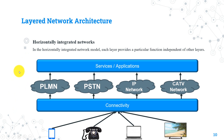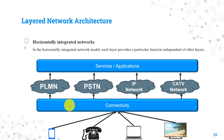In the horizontally integrated network model, each layer provides a particular function independent of other layers. Horizontal networks are not network-independent but layer-independent. The mobile operator can now have connectivity, control, and application layers, which contain the nodes that enable connection to PLMN, PSTN, IP network, or CAT networks at the same time. So a subscriber in a mobile operator can make voice calls, browse the internet, or even call a PSTN landline number. The three independent layers are the connectivity layer, control layer, and application layer.